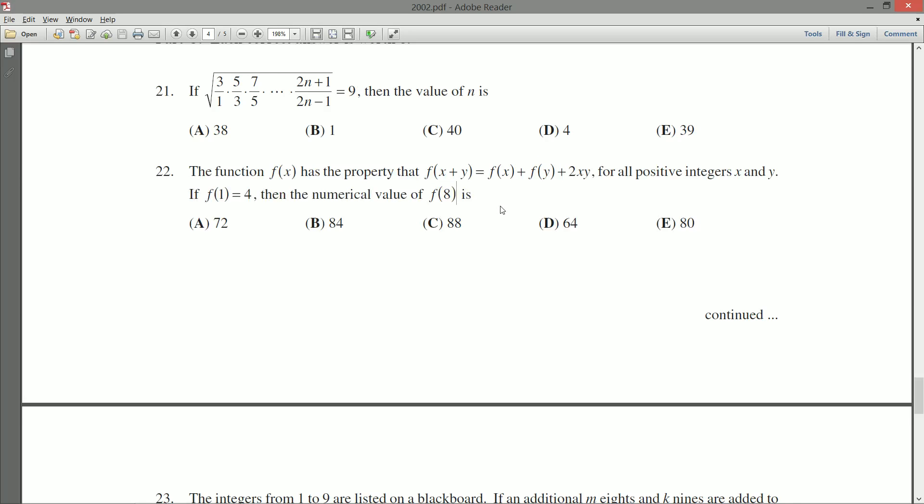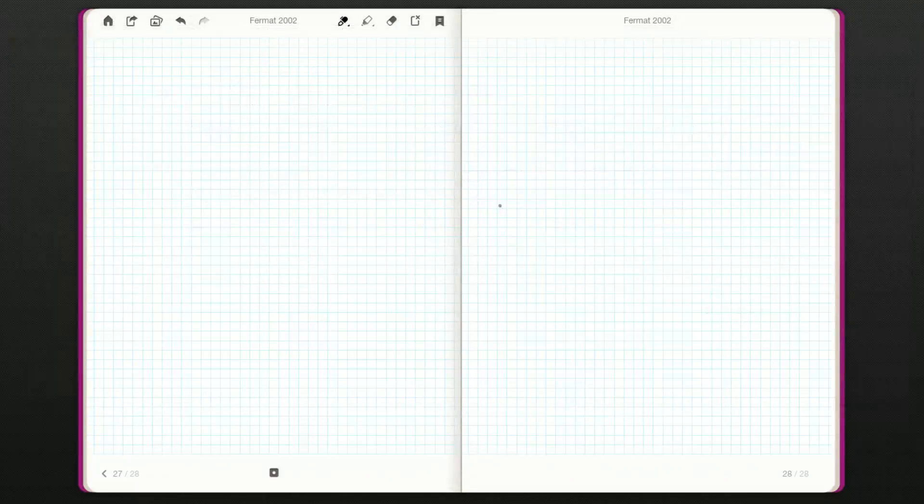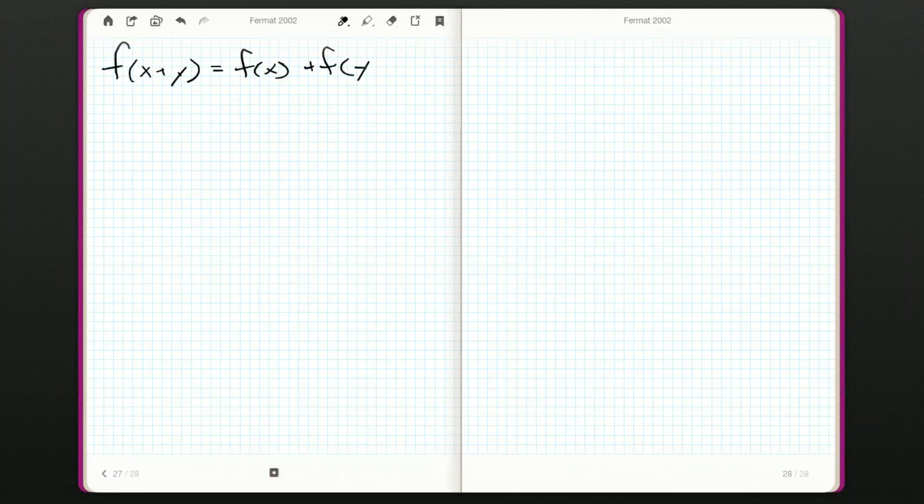So let's get right to it. I'll copy down our function property: f of x plus y, that's the same as f of x plus f of y plus 2xy. So if I let both x and y be 1, and that's really the only thing we can do.